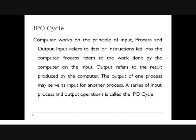The next stage is Process. Process refers to the work done by the computer on the input. Processing is done in the CPU — Central Processing Unit — which carries out all the instructions as per the given data. The third stage is Output. The output of one process may serve as the input for another process. Whatever input we give, the CPU processes it and sends it to the output device. Output devices can be a monitor, printer, plotter, or projector.